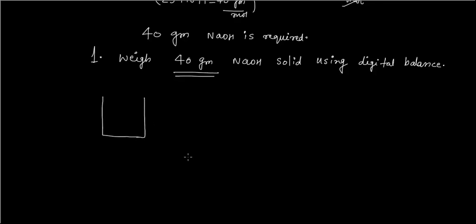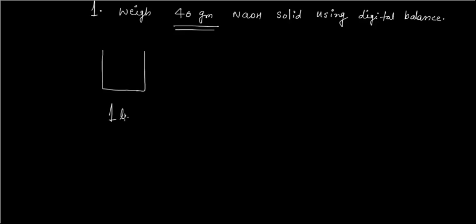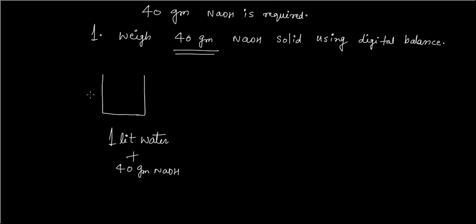Some people think: take 1 liter of water and dissolve 40 grams of NaOH in it. But this is a wrong idea, because when you take 1 liter of water and add 40 grams of NaOH, the final volume will be more than 1 liter. So this is not a good practice.